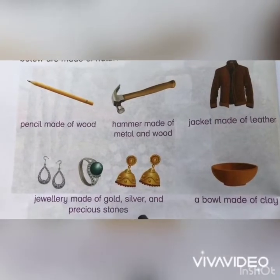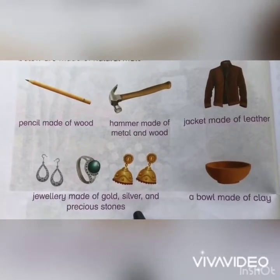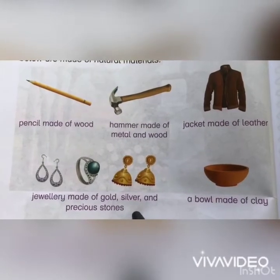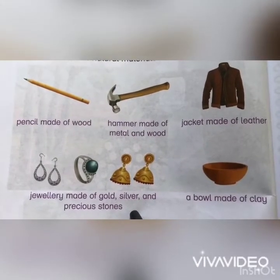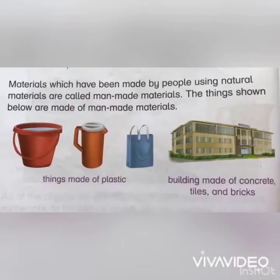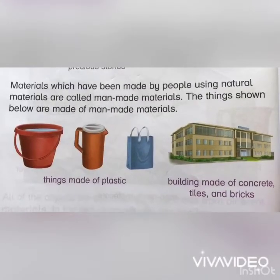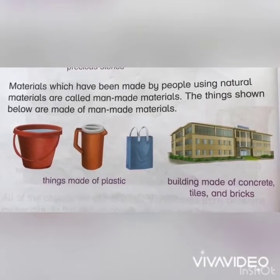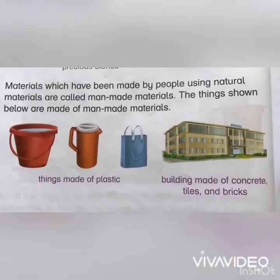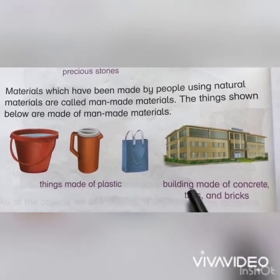The examples given on this page are examples of natural materials that are extracted from plants, animals, or from underground. Man-made materials are those materials in which people use natural materials for making new materials. For example, things made up of plastic.